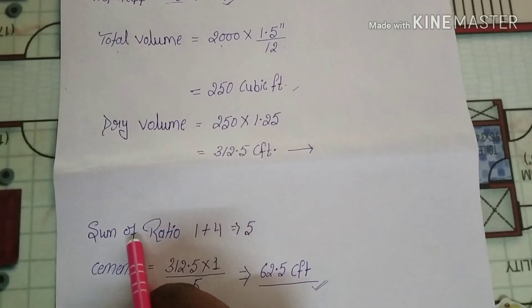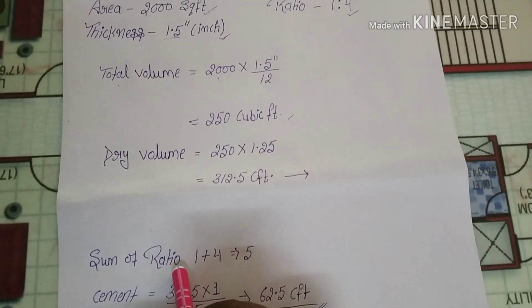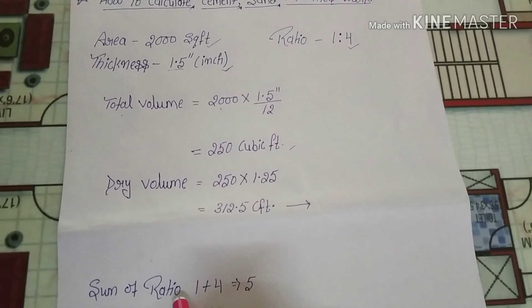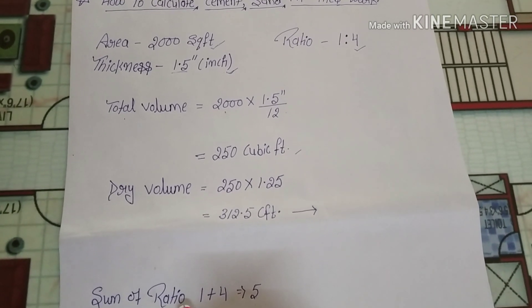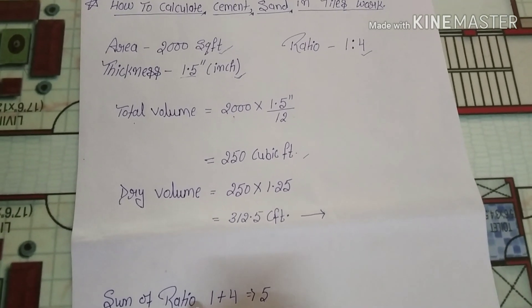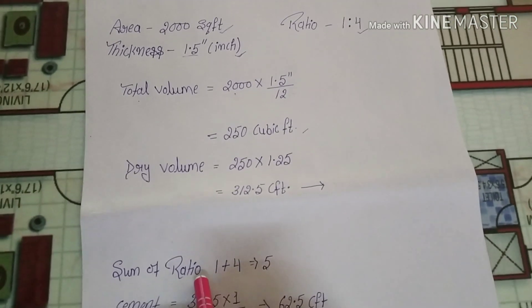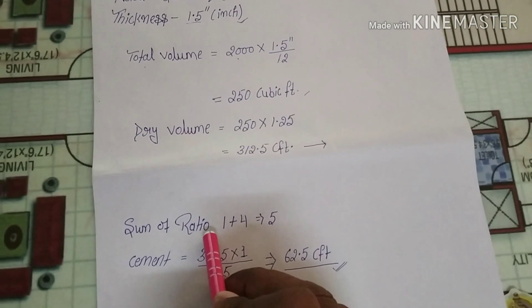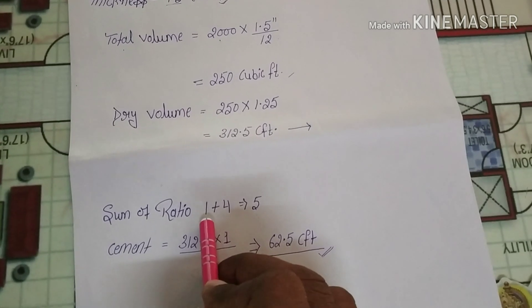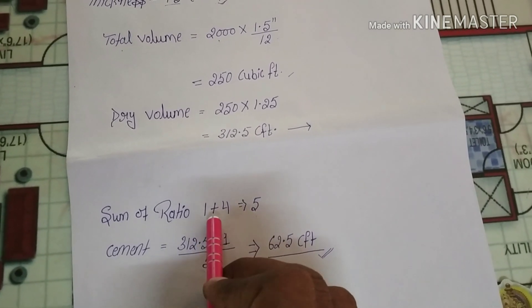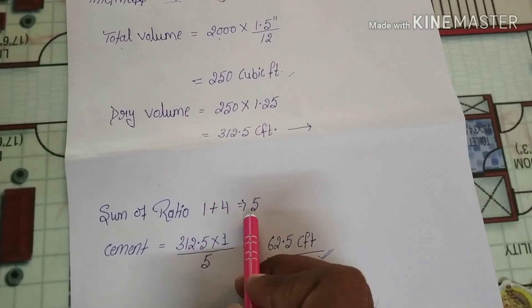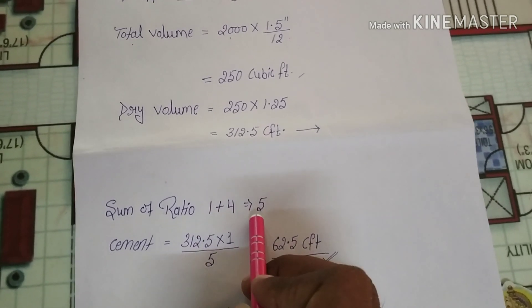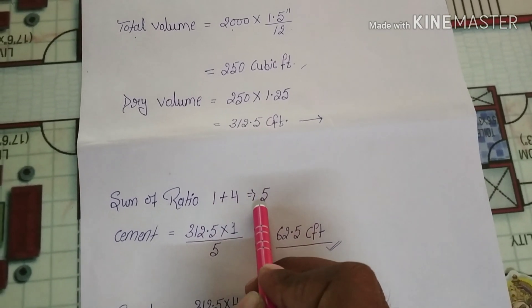Now we calculate the sum of ratio. The ratio we considered is 1:4 — one part cement and four parts sand. When we sum them, the total sum of ratio will be 1 + 4 = 5.